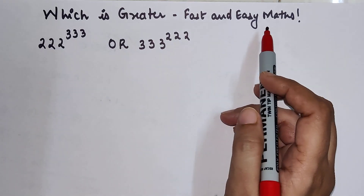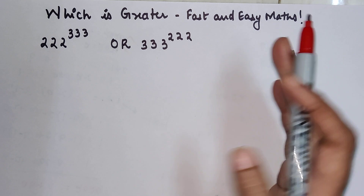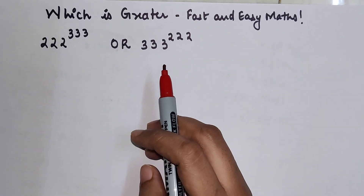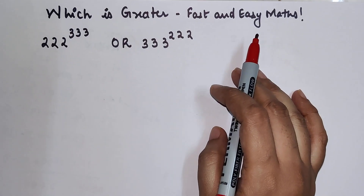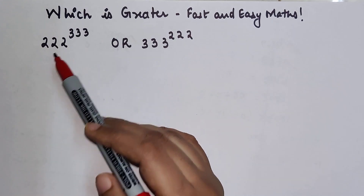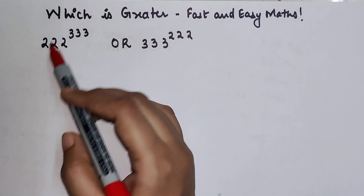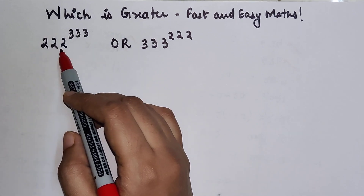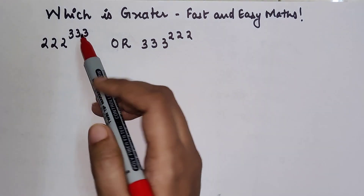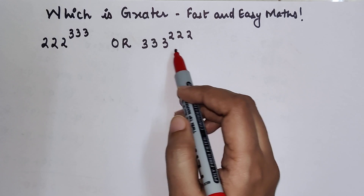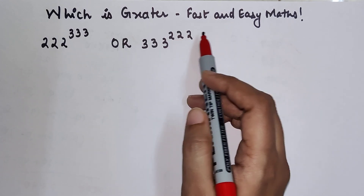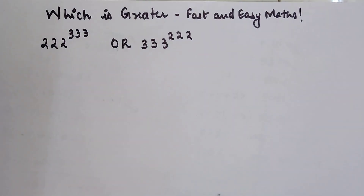Welcome everyone to my channel, Fast and Easy Math, which is dedicated to giving you tips and tricks related to mathematics. Today we are going to solve a question where we have to find the greater one between two entities: 222 raised to 333, or 333 raised to 222. We have to decide which one is greater amongst them.